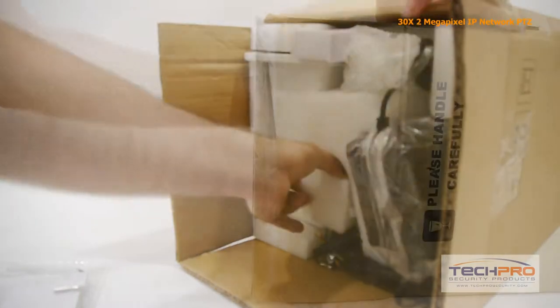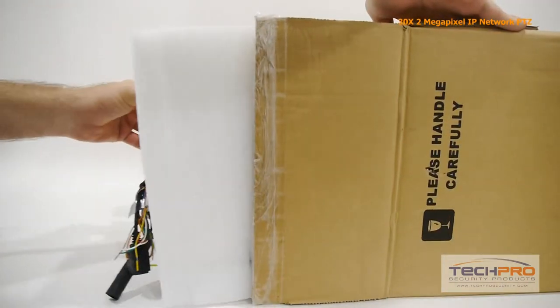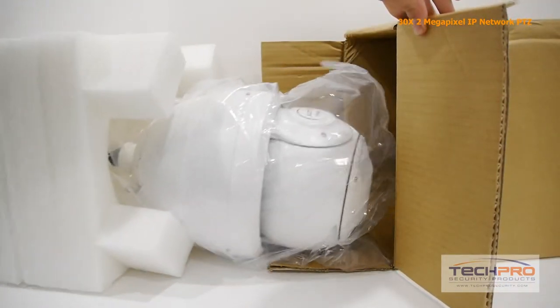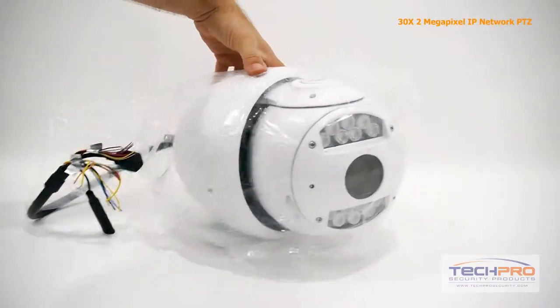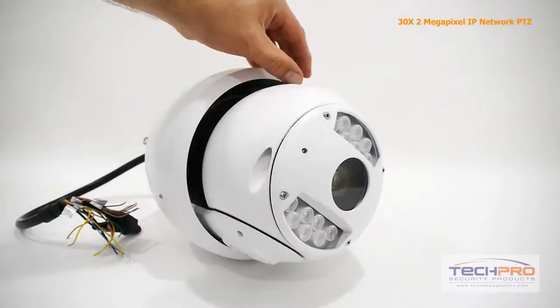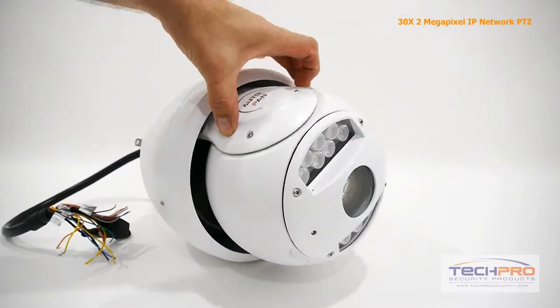This is the 2 megapixel IP-IR Pan Tilt Zoom Security Camera. This is our newest IP-PTZ camera. It can achieve a resolution of up to 1080p. It's got a 30x optical zoom and an IR of 250.